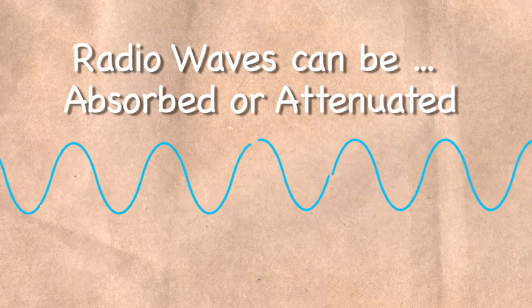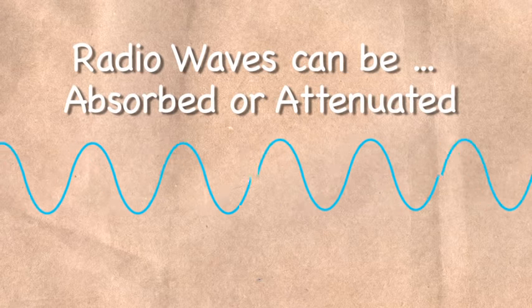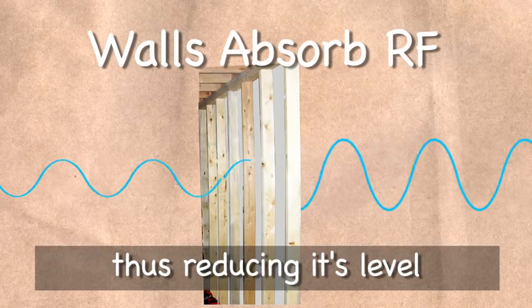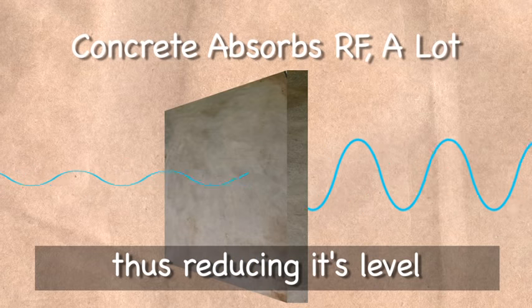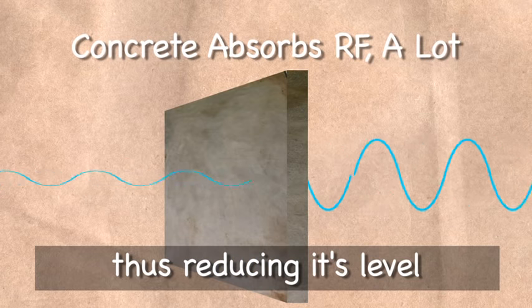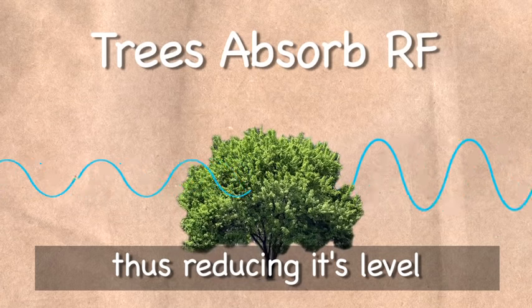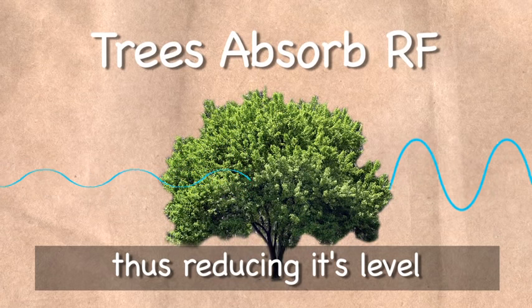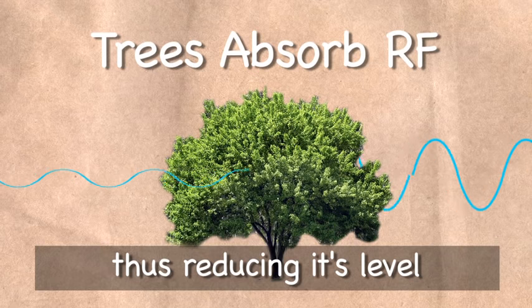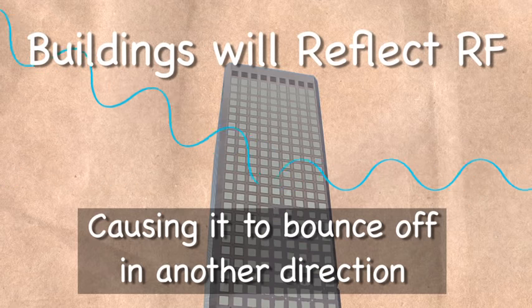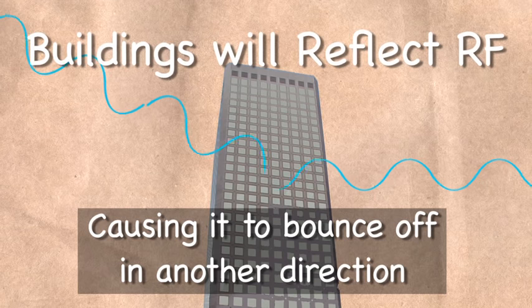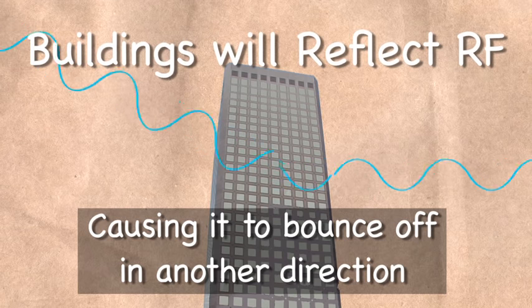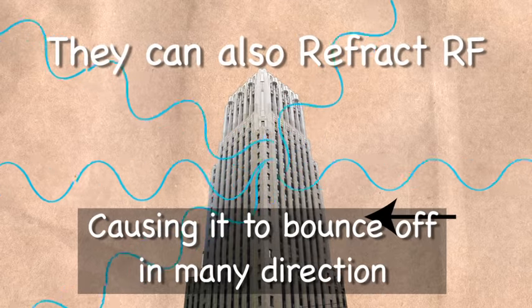Some materials absorb radio waves, while others reflect or refract them. All can cause problems when trying to receive an RF signal. Foliage tends to absorb radio waves. In fact, an antenna that once received a perfectly good signal may experience a signal loss as trees grow in front of it. Tall buildings tend to reflect radio waves, causing them to scatter in various directions, sometimes extending the range of the broadcast and sometimes interfering with it.